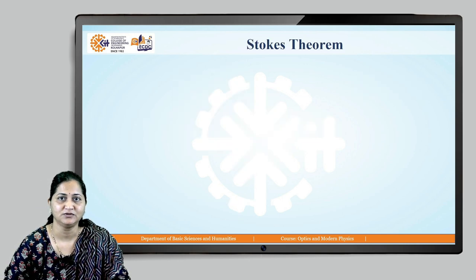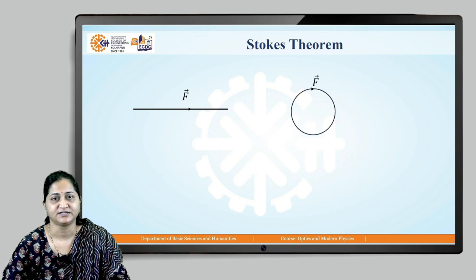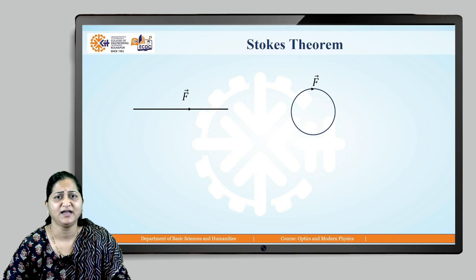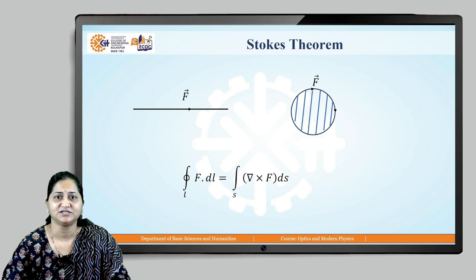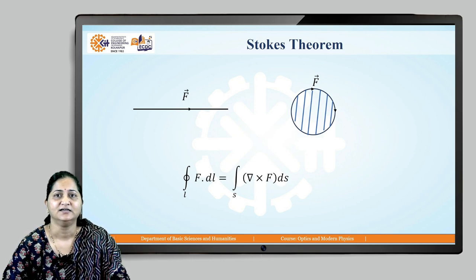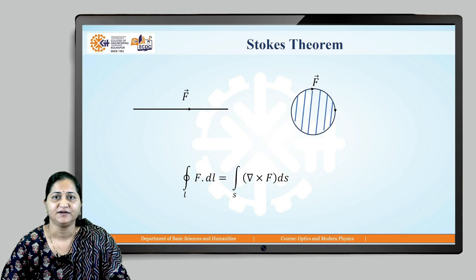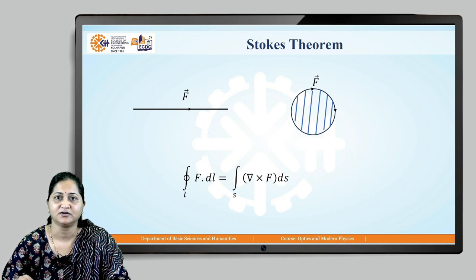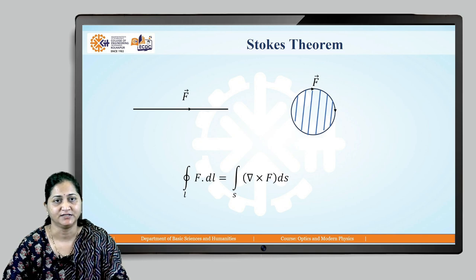Along with the Gauss Divergence Theorem, there is one more theorem that converts a line integral into a surface integral. When a vector field f curls around a wire, it is given by ∮f·dl as a closed line integral. When this closed loop encloses a certain surface, the line integral converts to a surface integral using the curl. This is nothing but Stokes' theorem: a closed line integral can be converted into a surface integral by taking the curl of that vector field.